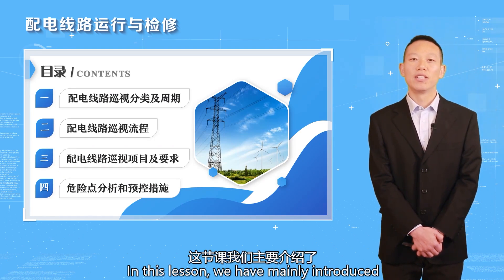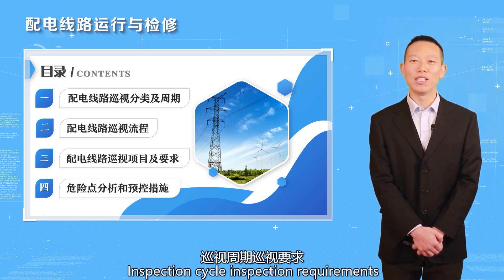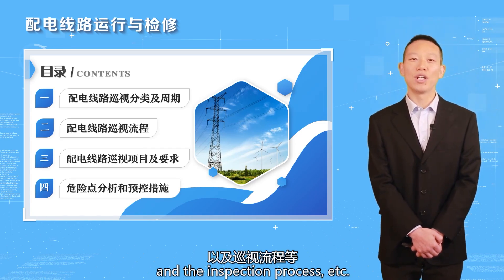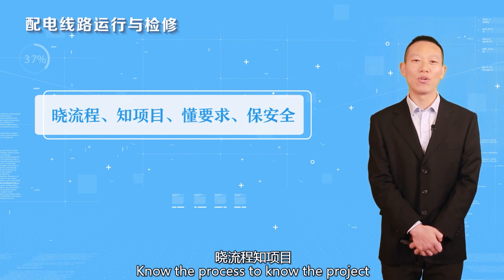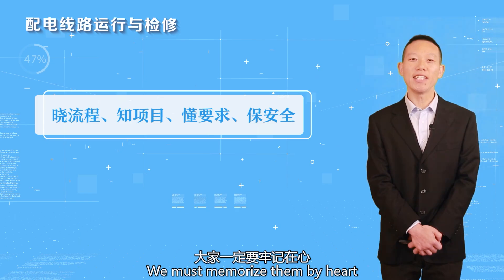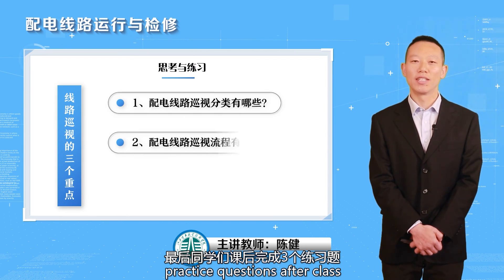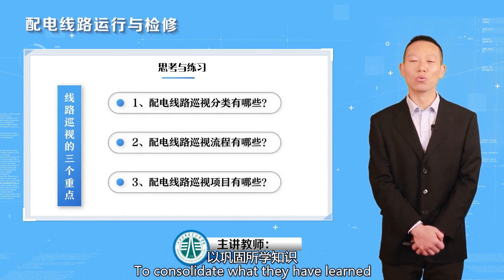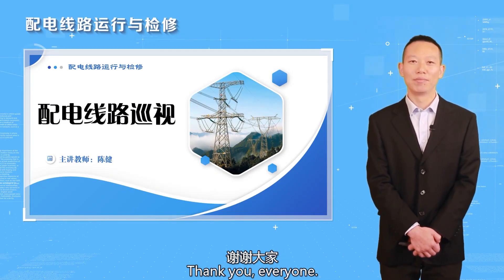In this lesson, we have mainly introduced distribution line inspection classification, inspection cycle, inspection requirements, inspection program, and the inspection process. To summarize in 12 words: know the process to know the project; understand the requirement to ensure safety. We must memorize them by heart. Finally, students should complete three practice questions after class to consolidate what they have learned. That's all for this lesson. Thank you, everyone.